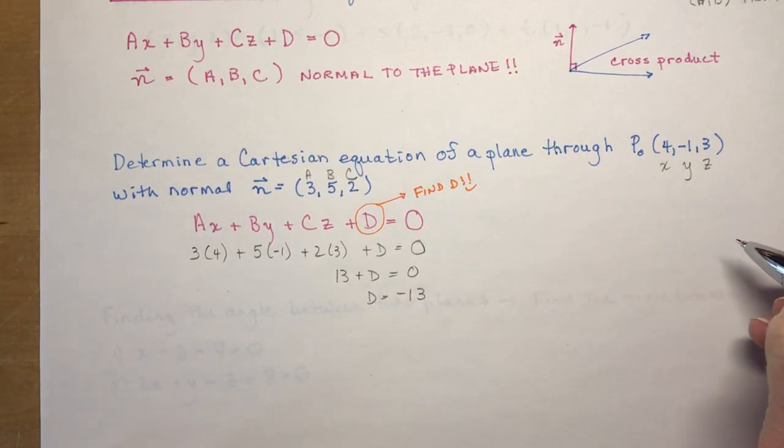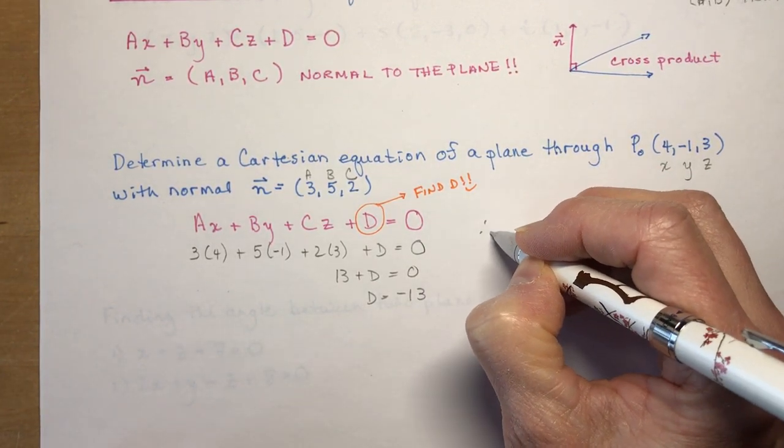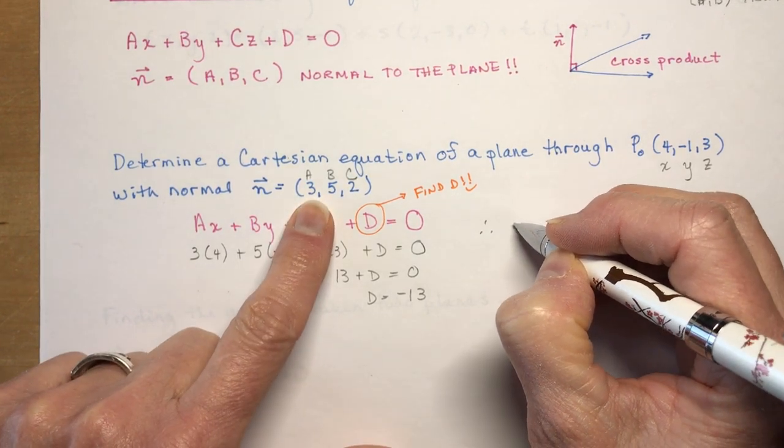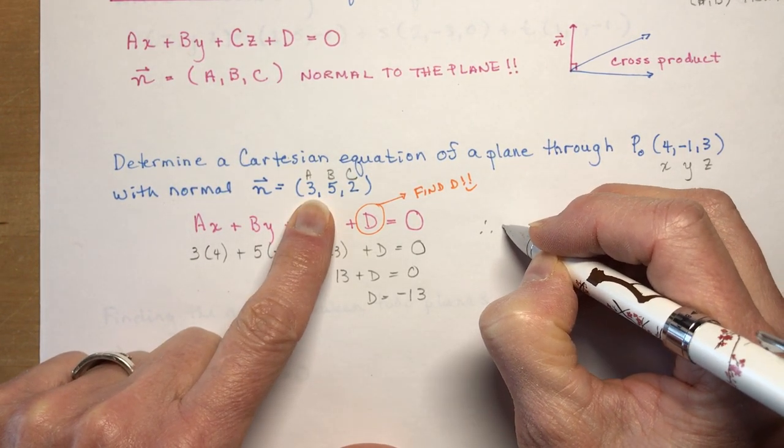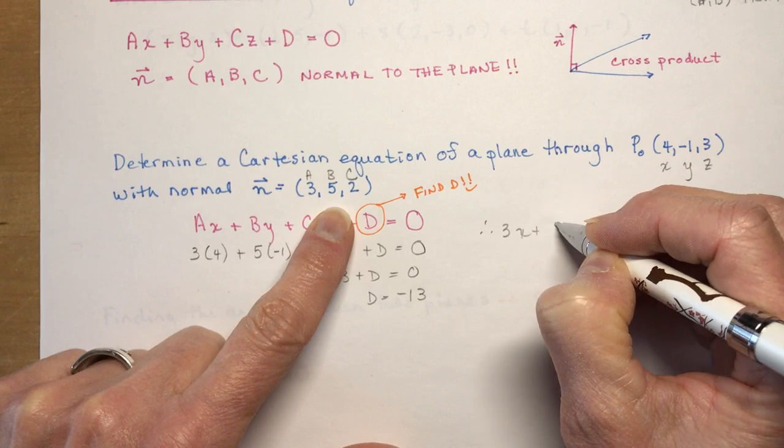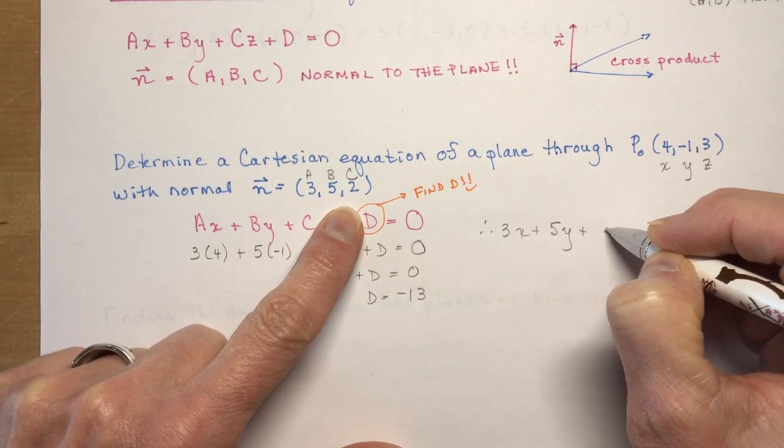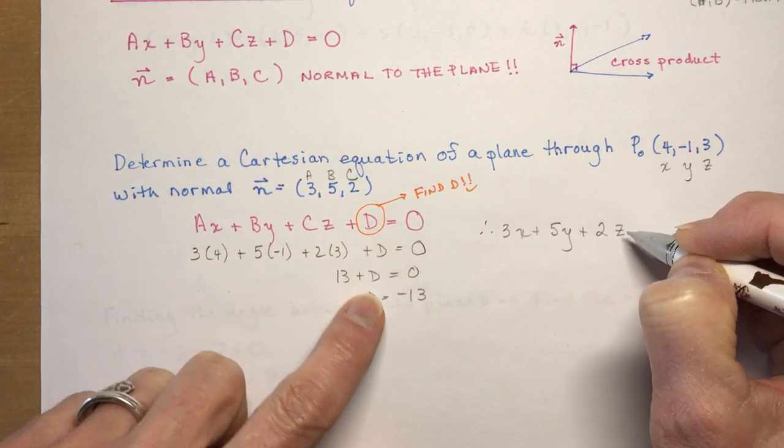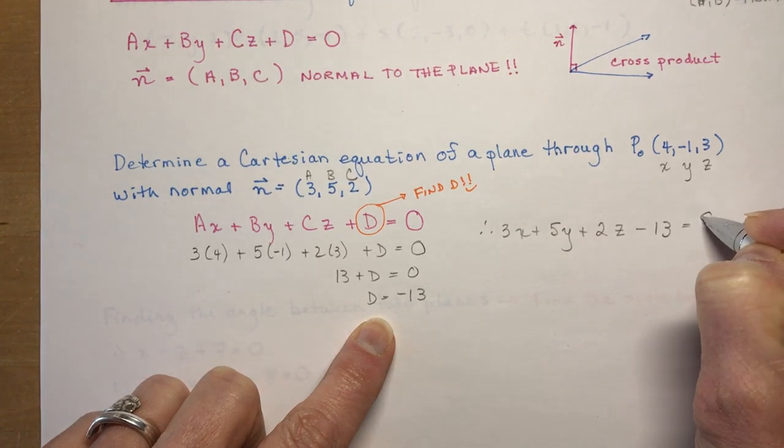So right away we can write out the equation. So therefore, we have 3x plus 5y plus 2z minus 13 is equal to 0.